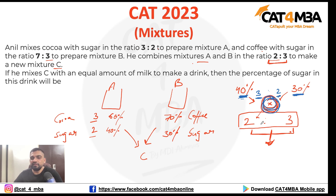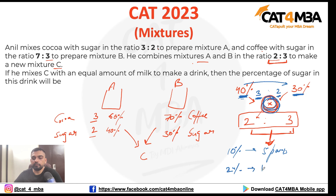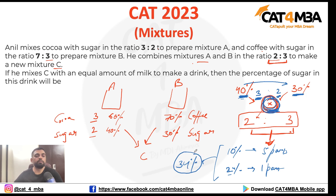We know x is between 30 and 40, a distance of 10. This 10 is divided into 3 + 2 = 5 parts, so each part equals 2%. Therefore x is 3 × 2 = 6% away from 40, or 2 × 2 = 4% away from 30. That gives x = 34. So Mixture C has 34% sugar.